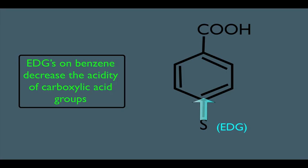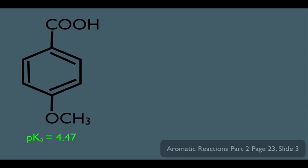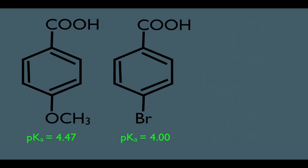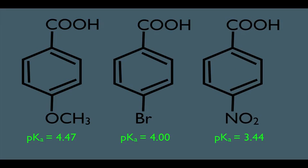Just to prove that, here are the actual pKa values of various molecules. Notice putting that electron withdrawing Br group on the ring lowers the pKa, therefore making it more acidic. And again, putting one of the strongest electron withdrawing groups lowers the pKa to 3.44, making this molecule the most acidic out of the three.